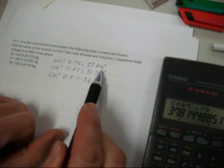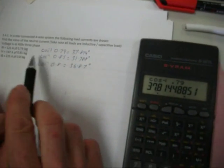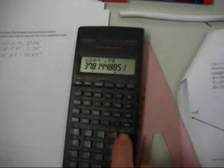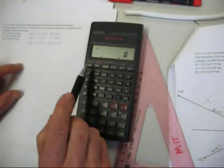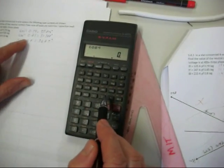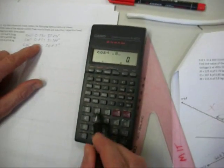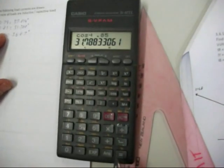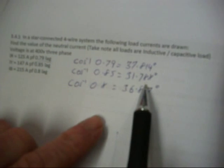37.814 degrees. Again to convert 0.85 lagging in the calculator. Enter, inverse, cos, 0.85 equals 31.788 degrees.